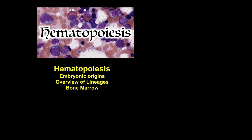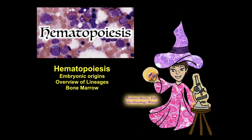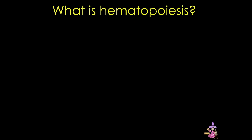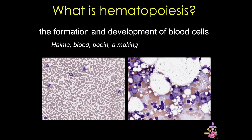Welcome to Hematopoiesis, Part 1. I'm Dr. Catherine Moore, the Histology Wizard. Mature blood cells have a relatively short lifespan, and so they must continuously be replaced with new cells from precursors in the bone marrow. This process is termed hematopoiesis, or hemopoiesis, from the Greek words hema meaning blood and poiein meaning a making. This tutorial will follow hematopoiesis from embryo to adult, give an overview of the stem and progenitor cells of hematopoiesis, and describe the histology of the bone marrow.